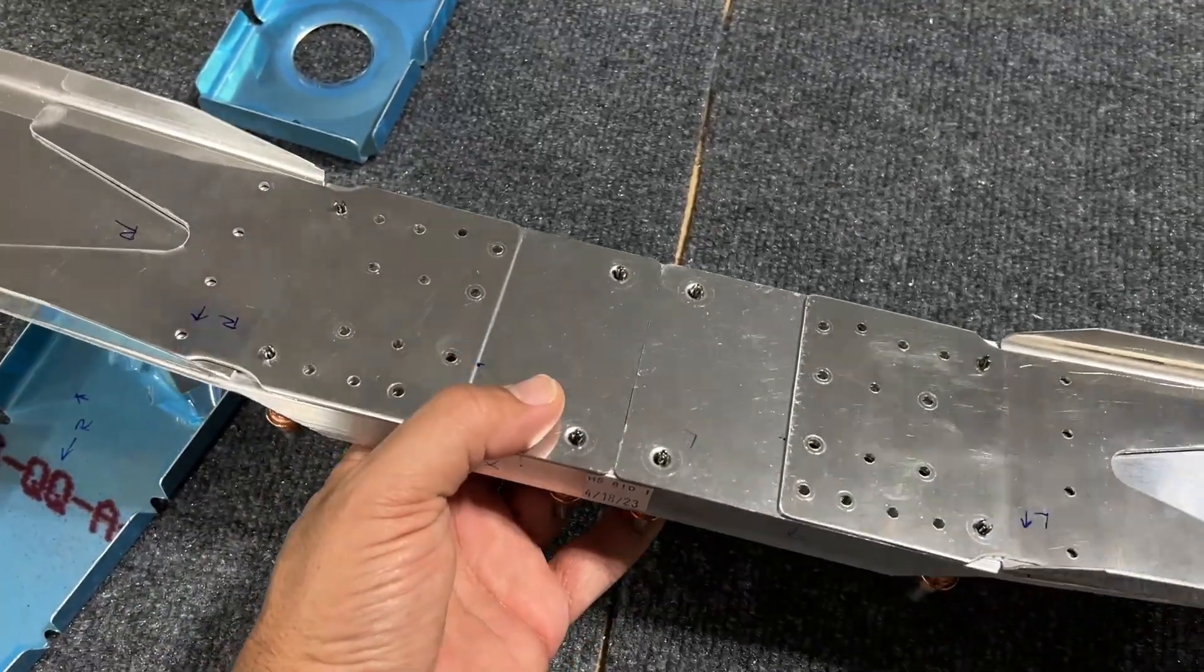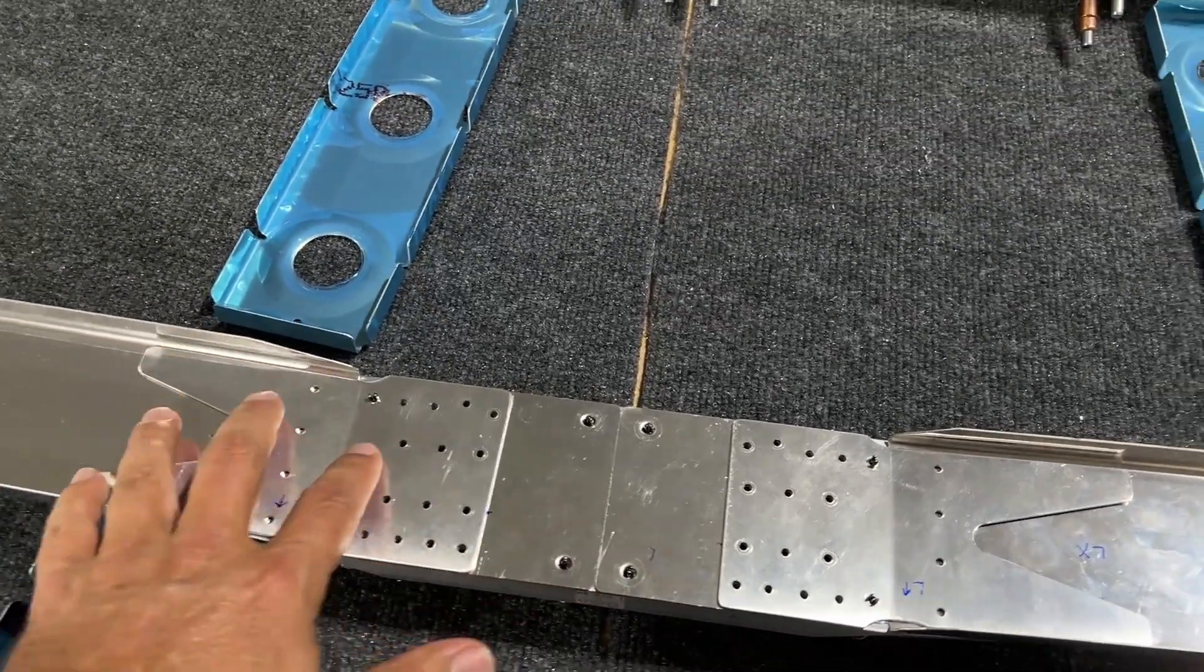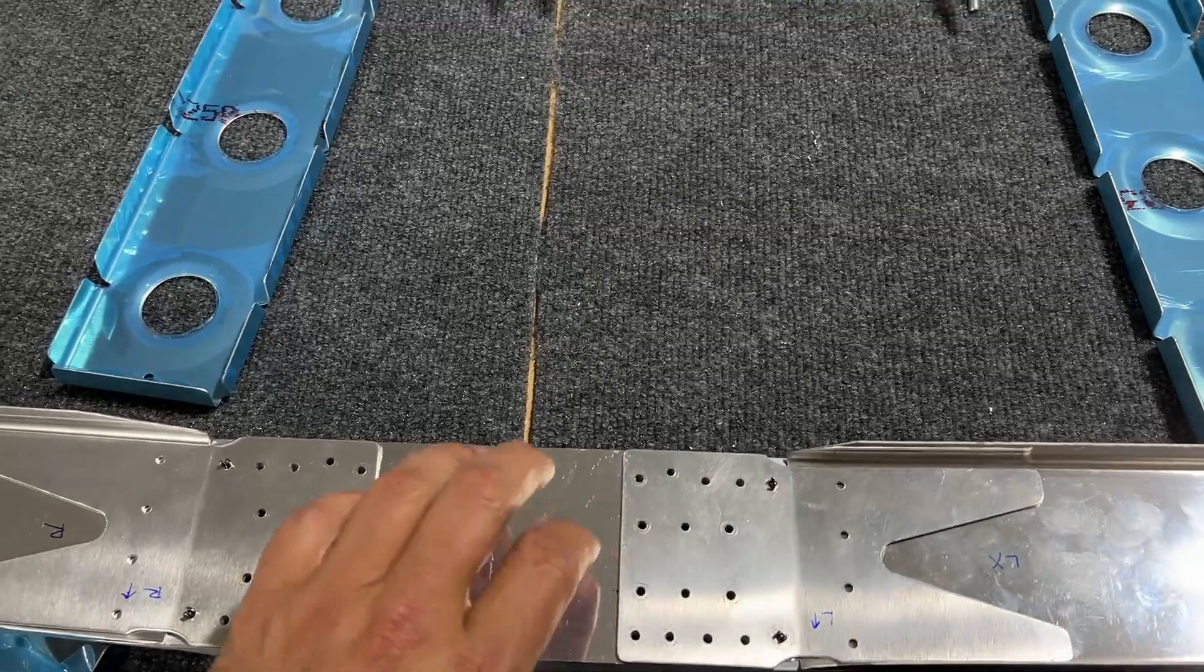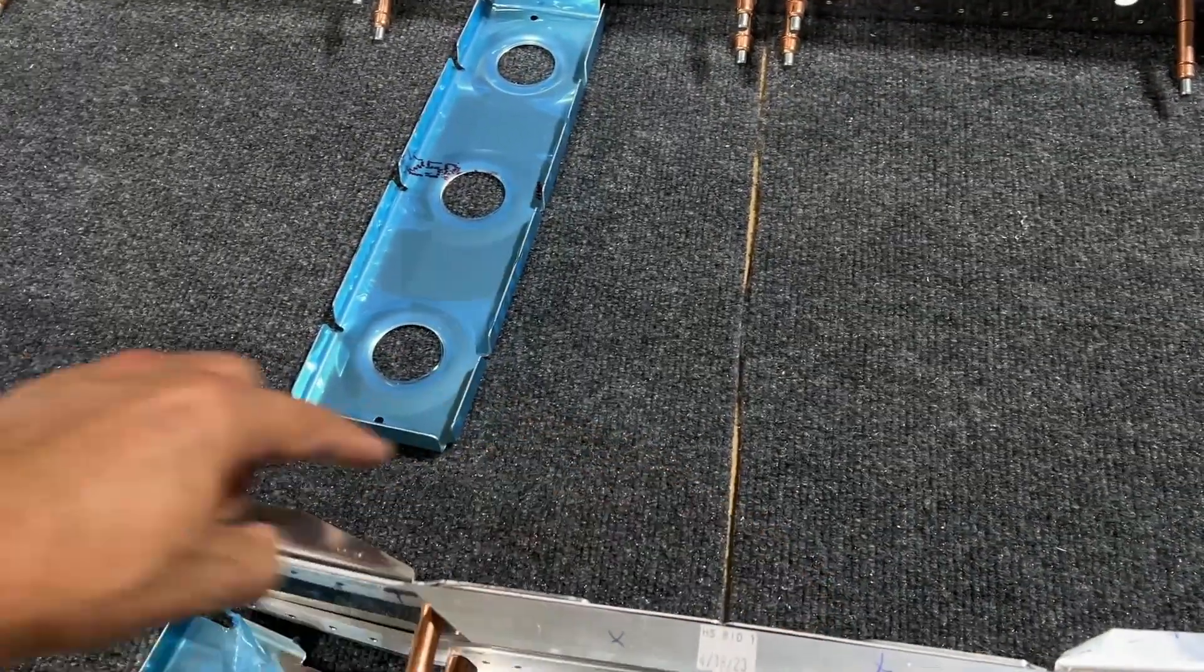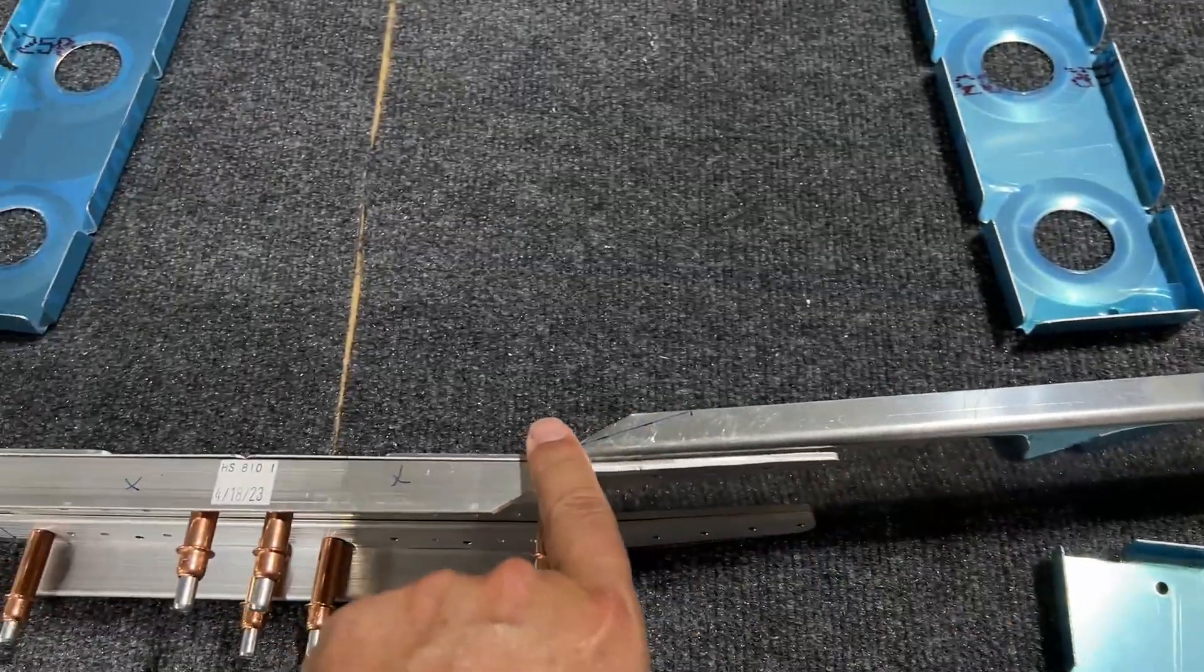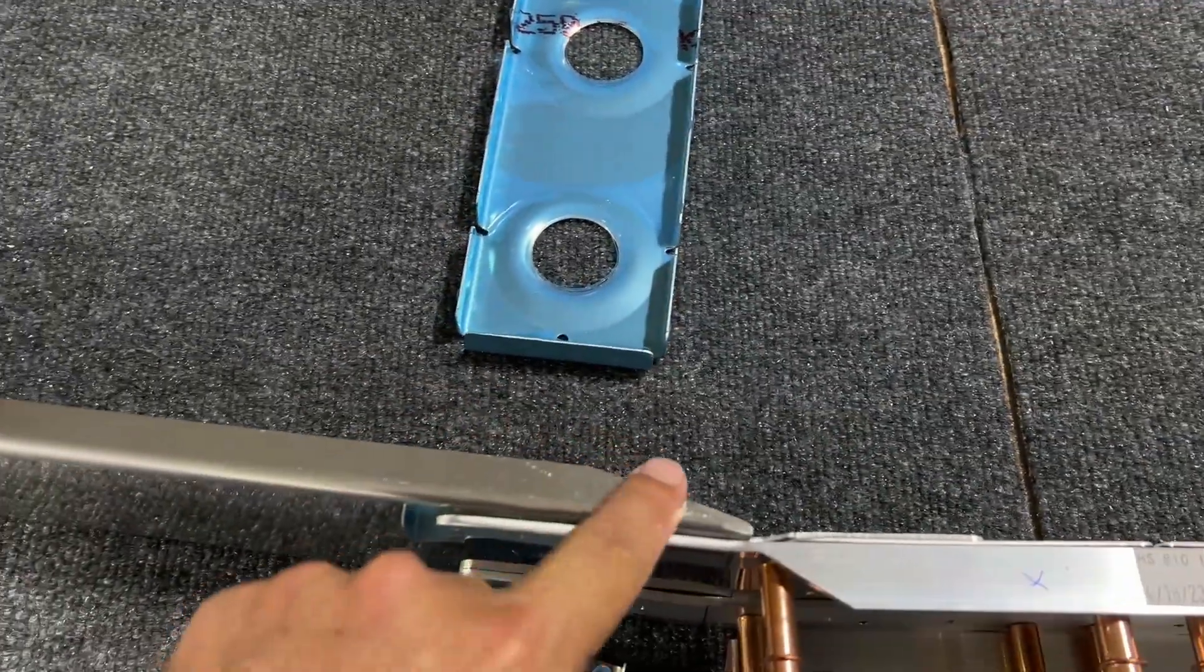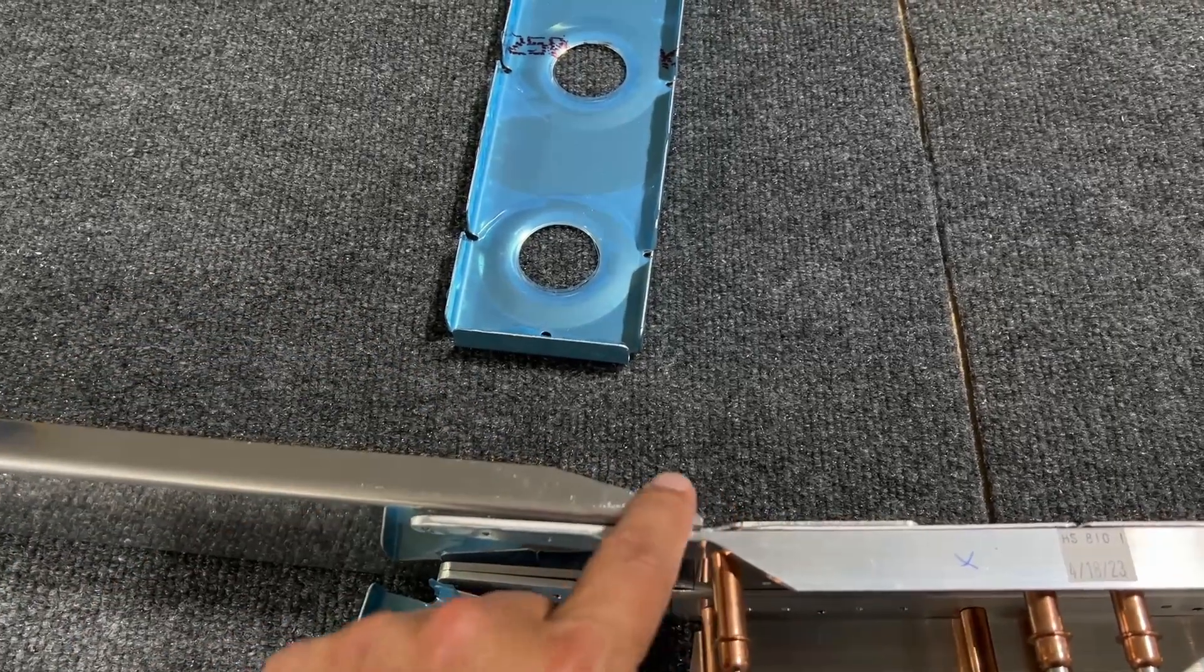Underneath it, there are these doubler plates. These are part of the recall that I talked about. They didn't exist before. So you have to match drill all of this. And then you also have to bend the tabs on these. These are the two halves of the spar. And these were squared off right here. This one is ruined. So I'm using it as a test piece to work.